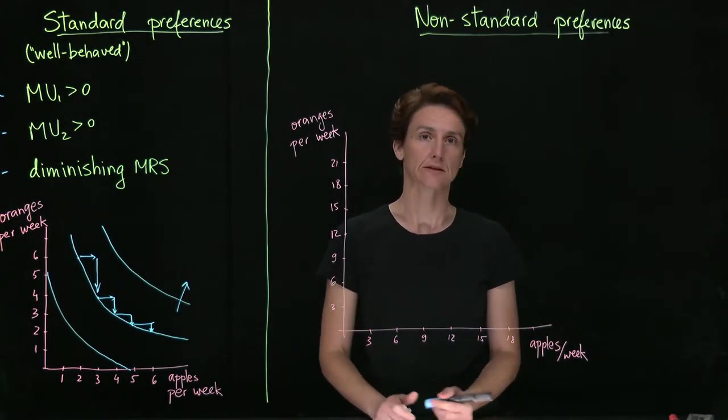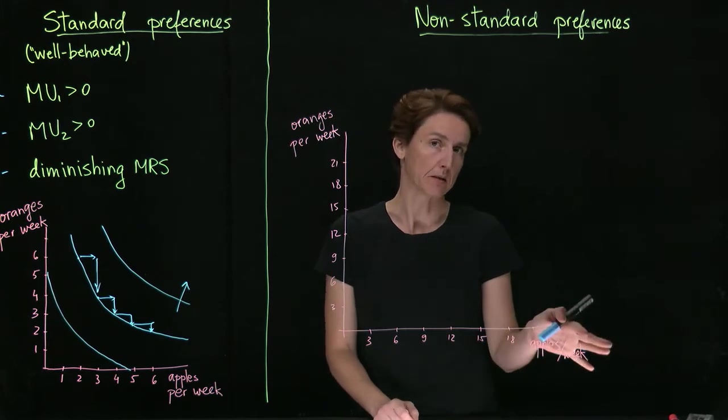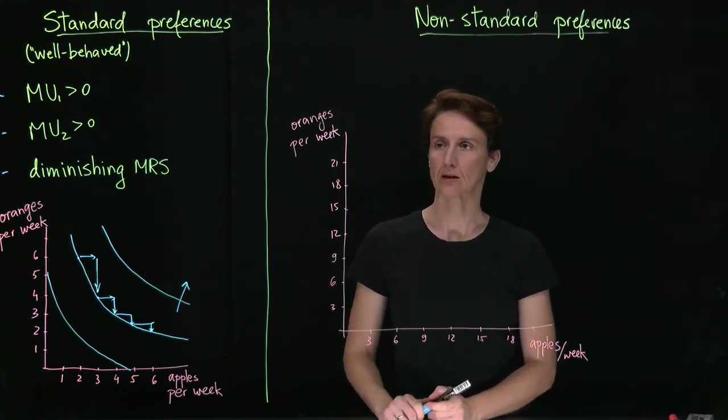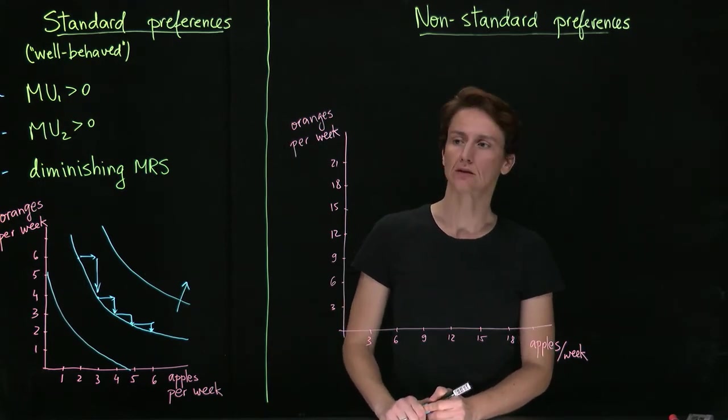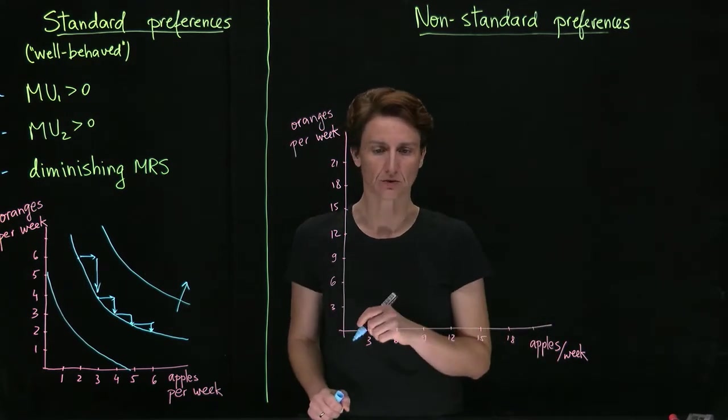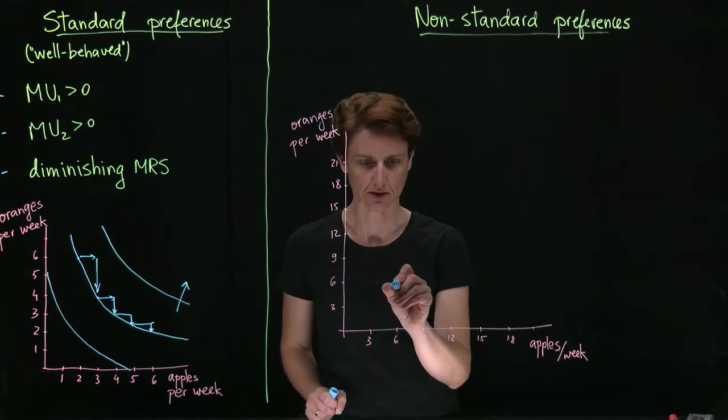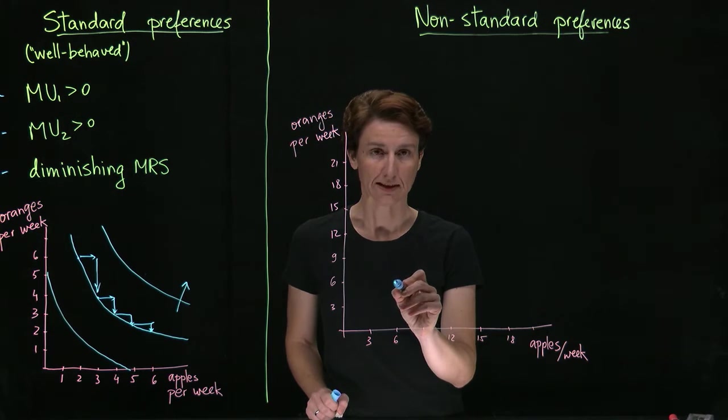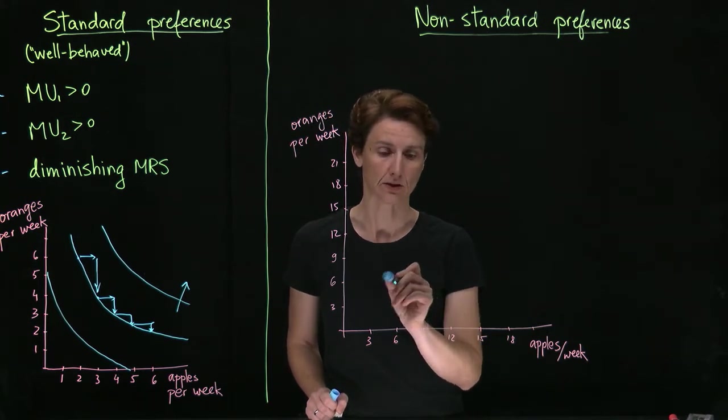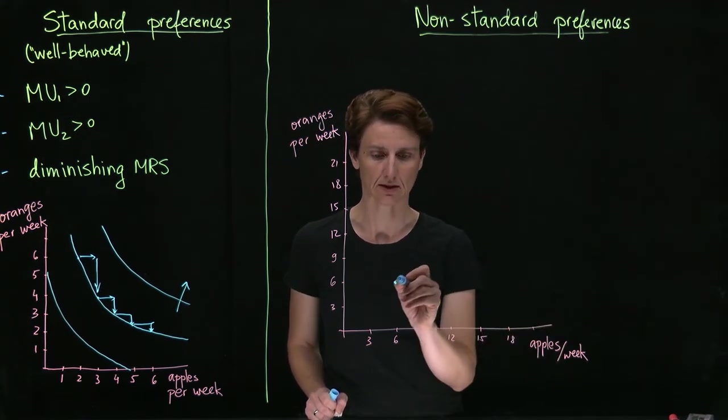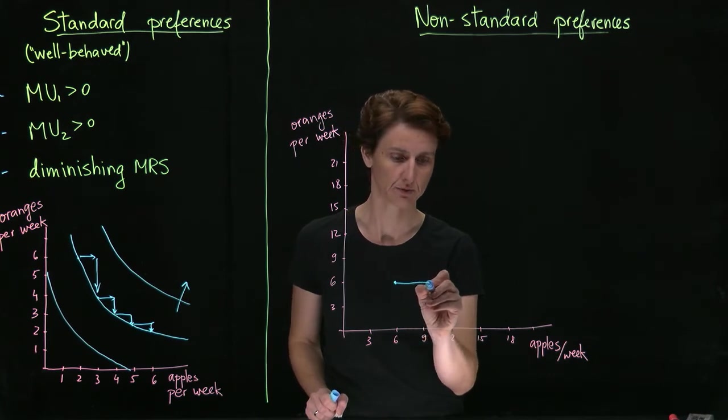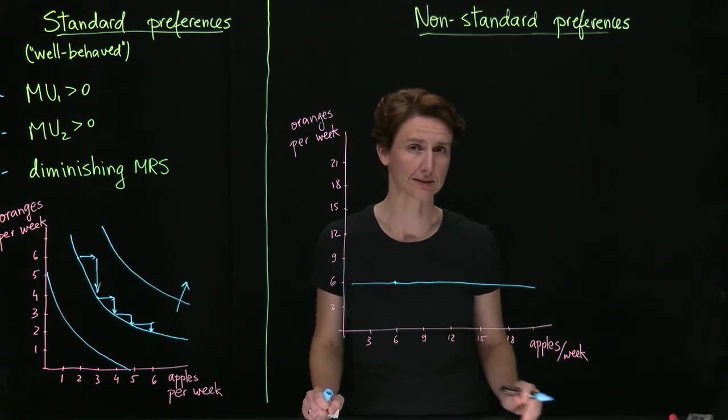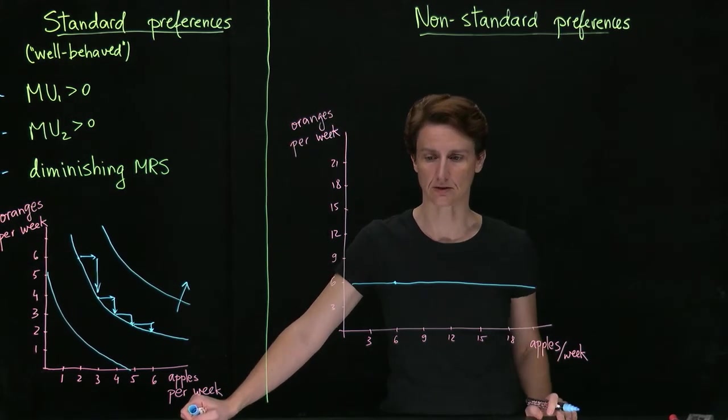What would it look like if someone didn't like apples at all, was simply not affected in any way by them? To figure out what indifference curves look like, it's useful to start from some point in the space. Suppose we're starting with six of each. Which way can we move while maintaining the same level of utility? Well, if we don't care about apples, that means we can add apples or subtract apples and we'll still be on the same indifference curve.